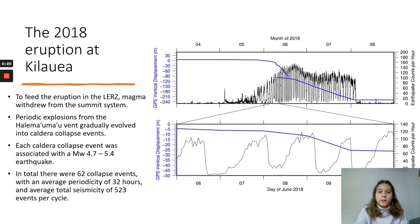Kilauea Volcano is a basaltic shield volcano on the island of Hawaii and is one of the most active and well-monitored volcanoes on the planet. On the 3rd of May, erupted fissures opened in the Lower East Rift Zone with lava effusion rates exceeding 100 m³ per second. To feed the eruption in the Lower East Rift Zone, magma withdrew from the summit system. As magma withdrew, periodic explosions from the vent gradually evolved into caldera collapse events. Each caldera collapse event was preceded by a near-linear increase in seismicity and was associated with an earthquake of magnitude between 4.7 and 5.4.